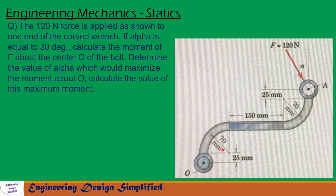In this problem, given is a curved wrench as shown in the figure, with various dimensions mentioned. A force F equal to 120 Newton is acting at point A, and the angle between the force and the vertical is alpha. We need to find the moment due to F about O when alpha equals 30 degrees, and then find the alpha for which the moment is maximum, along with that maximum moment value.